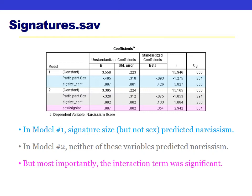So what we know so far is that there is a significant interaction between sex and signature size when predicting narcissism. In other words, the relationship between signature size and narcissism appears to be different for men than it is for women.